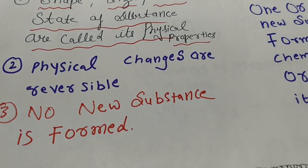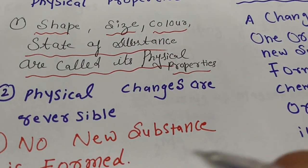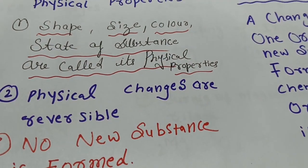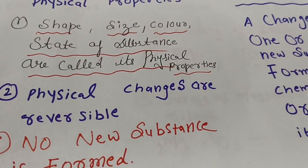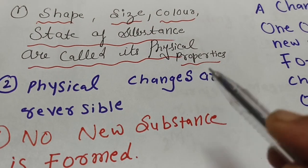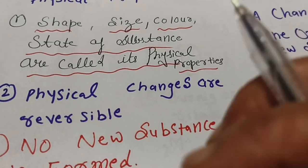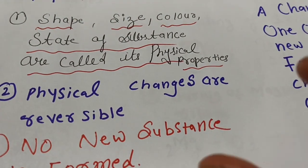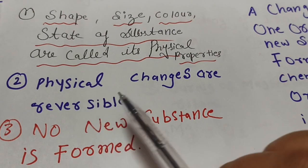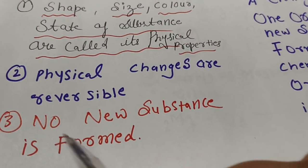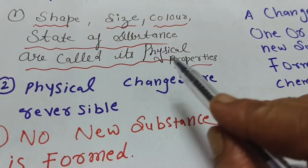There are no new types of substances formed in physical changes. If you tear pages, the size will change but it is not a different type of substance. Ice made from water has formula H2O, whether it is solid, liquid, or gaseous. So physical changes are reversible and there is no new substance formation. Shape, size, color, and state of substance are physical properties.